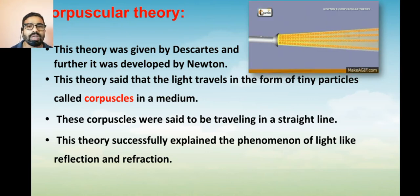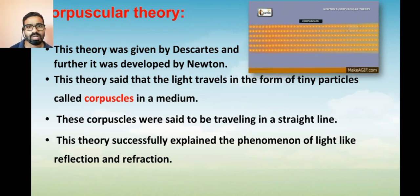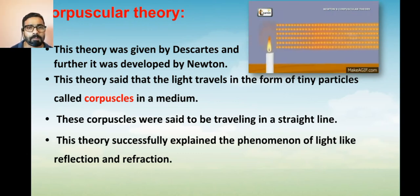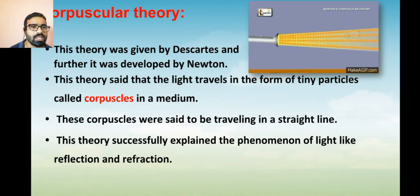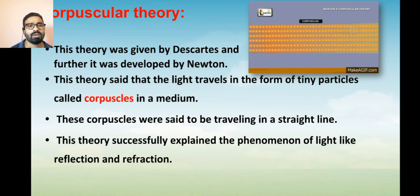Using this theory, Descartes said that light travels in the form of particles — very tiny particles — and he named them corpuscles. You can see the animation where particles are emitting from sources such as the sun, candle, and torch, and traveling into space in the form of particles. He also said that for the propagation of such particles, a medium is required.